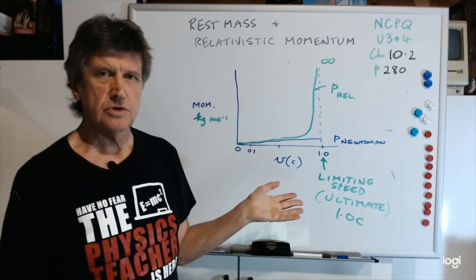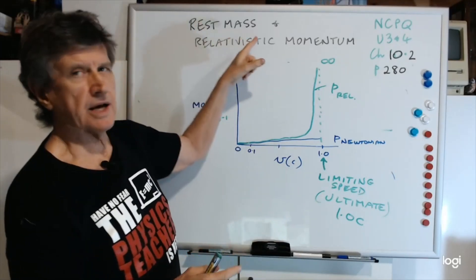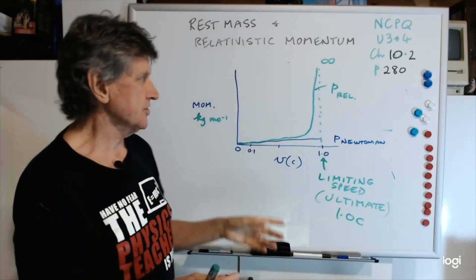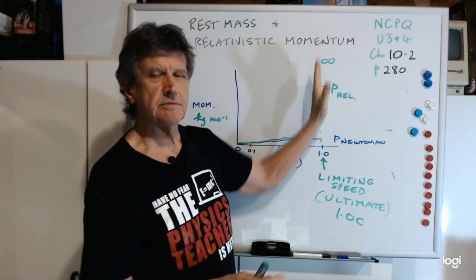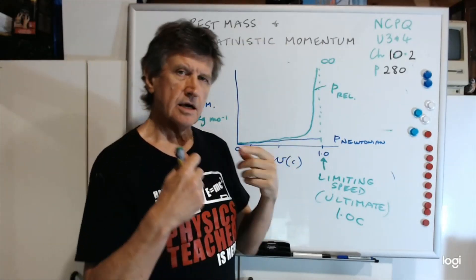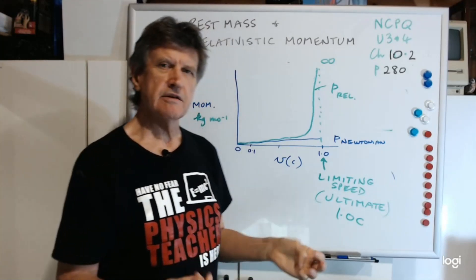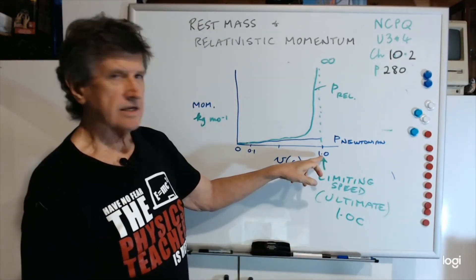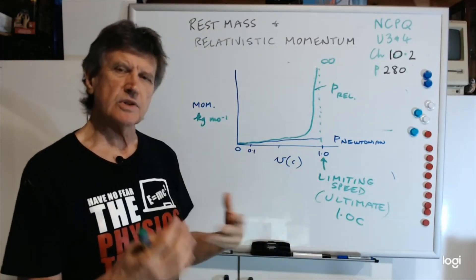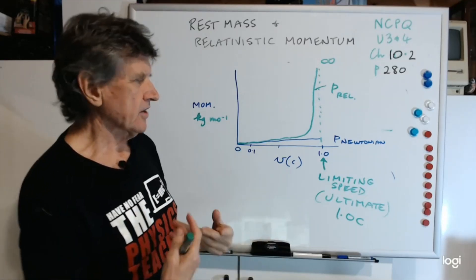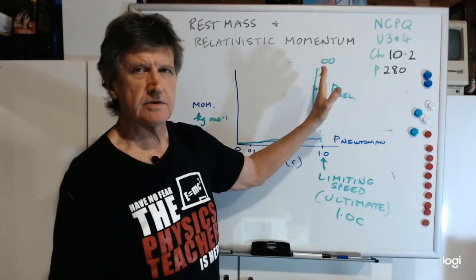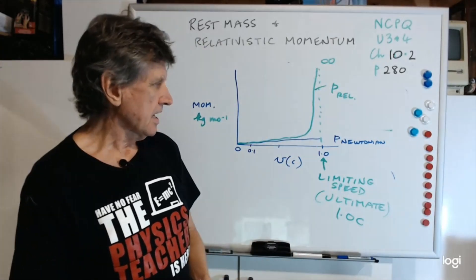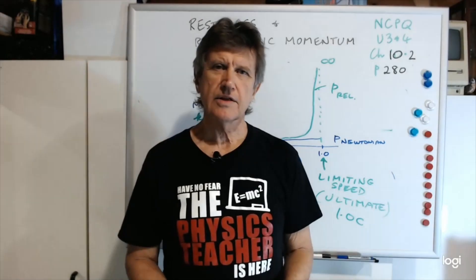I might leave that there. There's not a lot more to do. The key point is, rest mass is m0, it doesn't change. Relativistic momentum gives you the ultimate speed of the universe, because you'd need infinite momentum to get to that speed, and it can't happen. That's with an object with mass. An object without mass, such as a photon, is no problem, because it travels at the speed of light. That's it. I'll leave it there. Thank you.